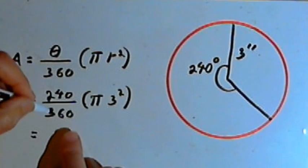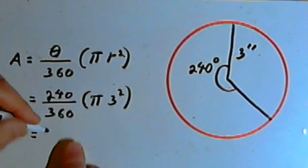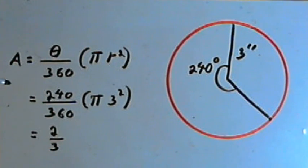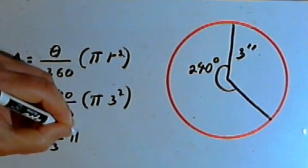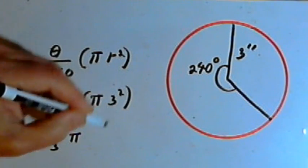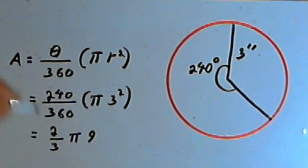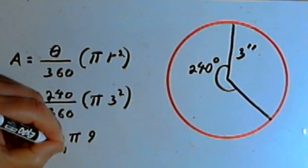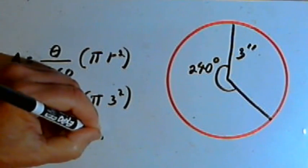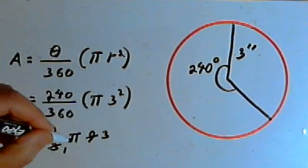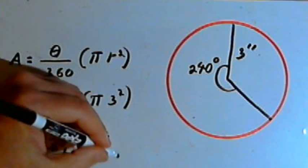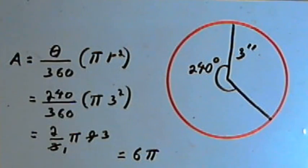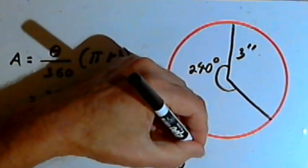Well, 240 and 360 can both be divided by 120. So that means I'm going to have 2 over 3 times pi times 3 squared, which is 9. I can divide the denominator of this 3 by a 3, and divide the 9 by 3 and get 3. And now I've got 2 times pi times 3, and that's going to equal... 2 times 3 is 6, so that's going to be 6 pi square inches.